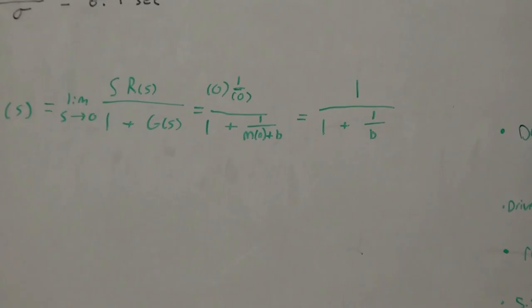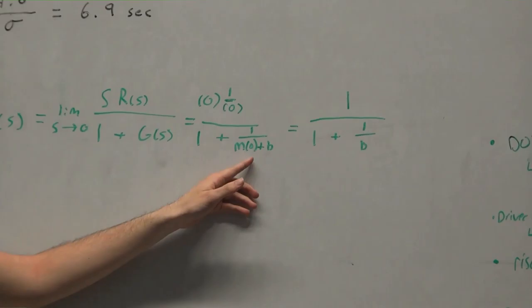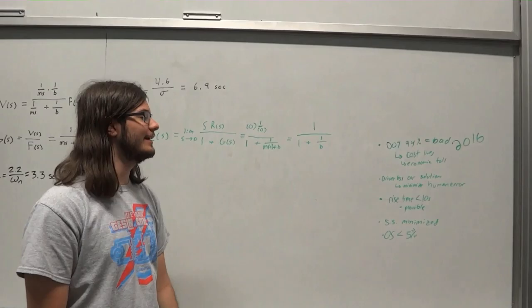So we put s times 1 over s, which is our input, since it's going to be a unit step function, and divided by 1 plus 1 over ms plus b, the m portion cancels to 0, and we're left with 1 over 1 plus 1 over b as our final steady state error for the open loop system.